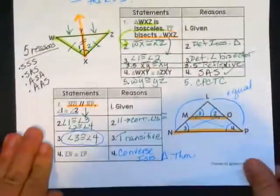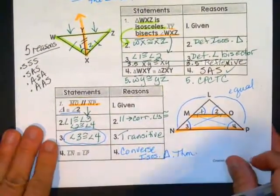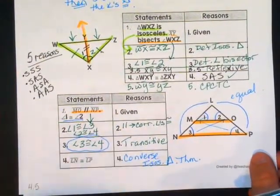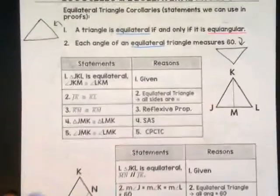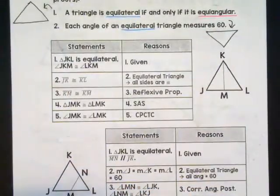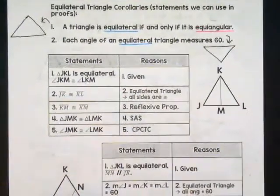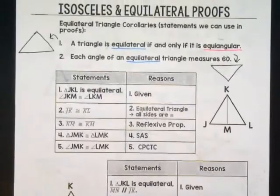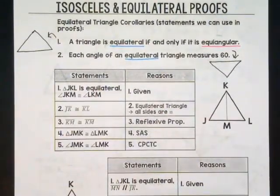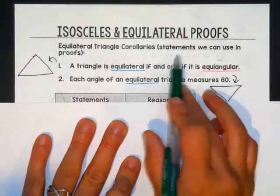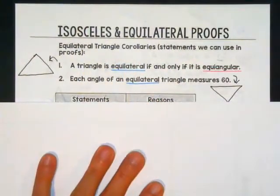Some of you are doing awesome with these proofs. Some of you are getting them slowly. Some of you are struggling — that's okay. We're teaching you a thought process on how to make statements and give reasons; give your brain a chance to develop this. I may have accidentally copied the side that had all the answers, so we're just going to focus on the top two corollaries and you can look at those proofs later on your own.